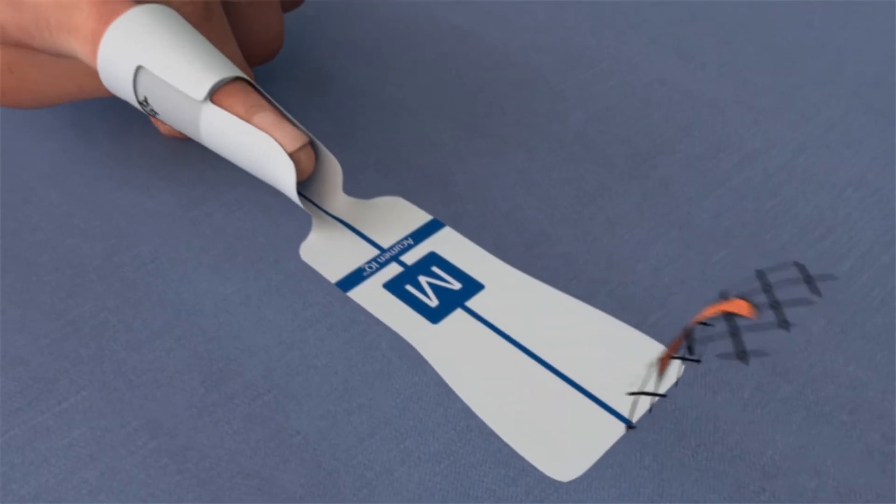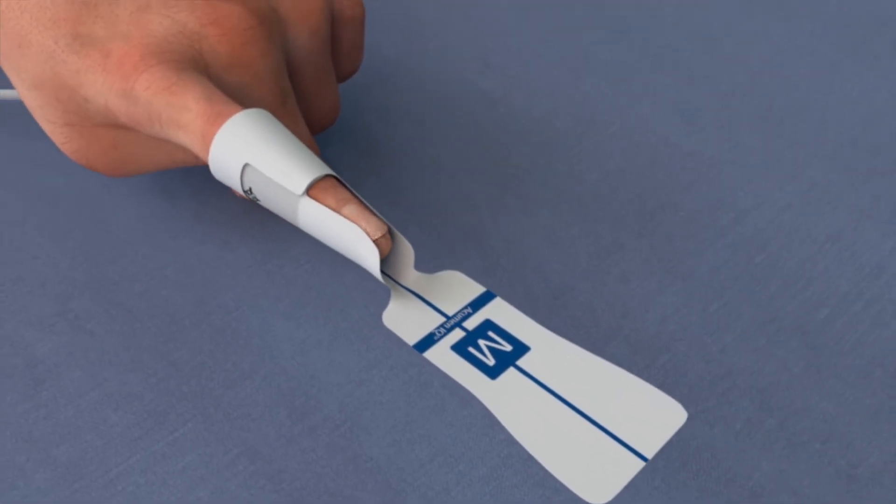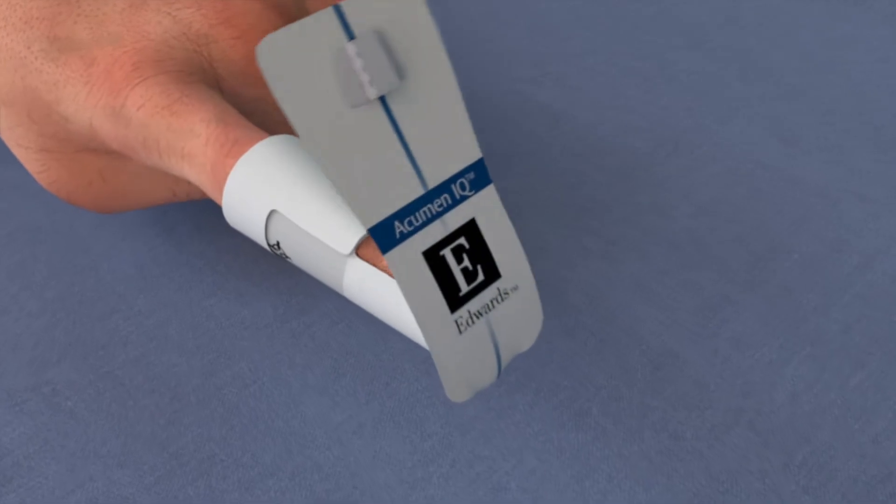Remove the adhesive backing from the distal end of the alignment tab and secure to the top of the finger cuff.